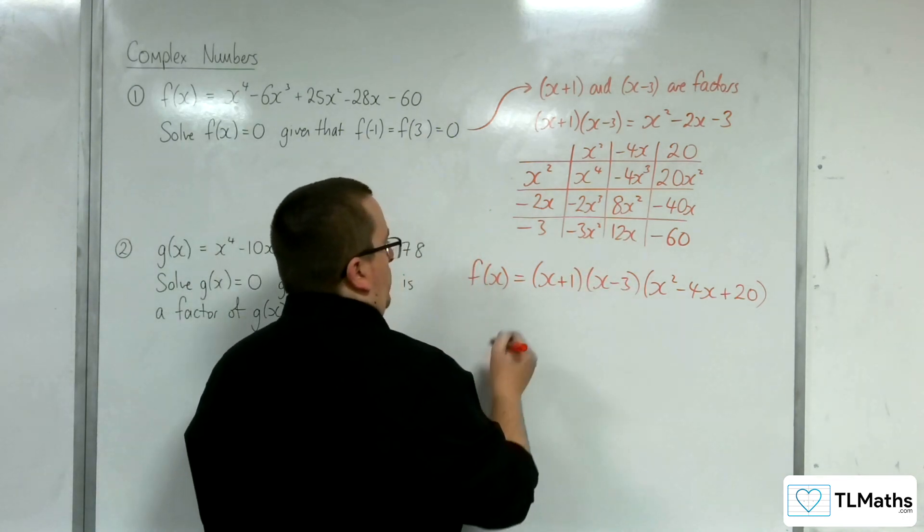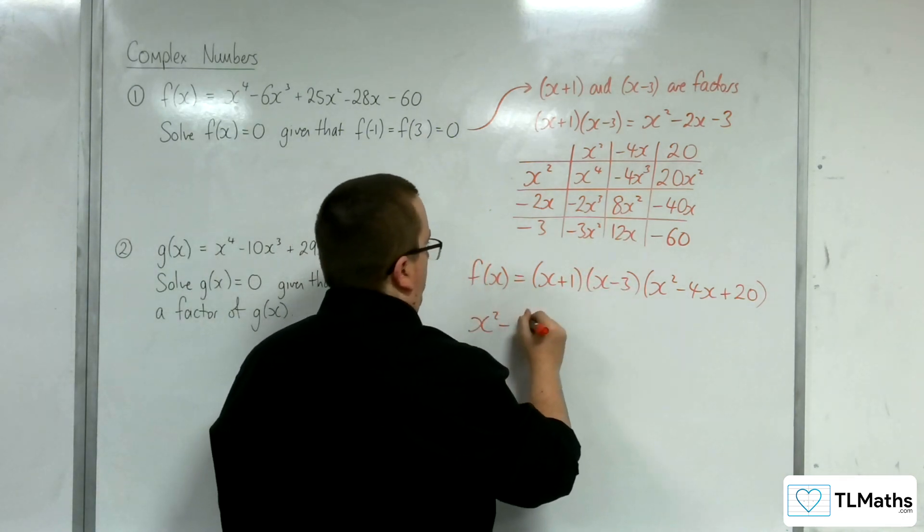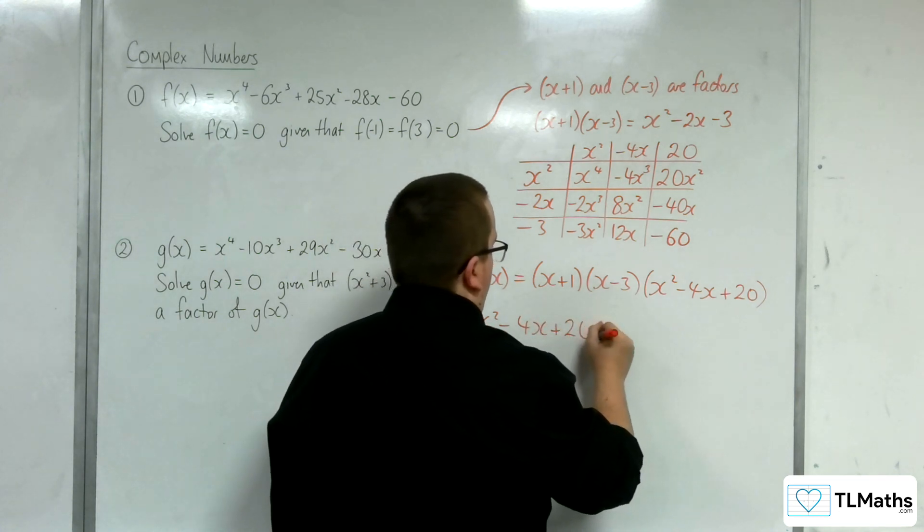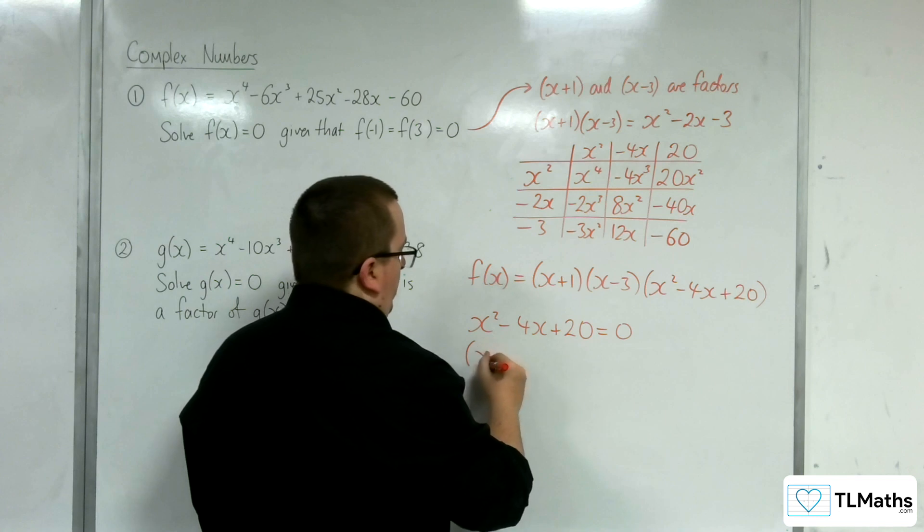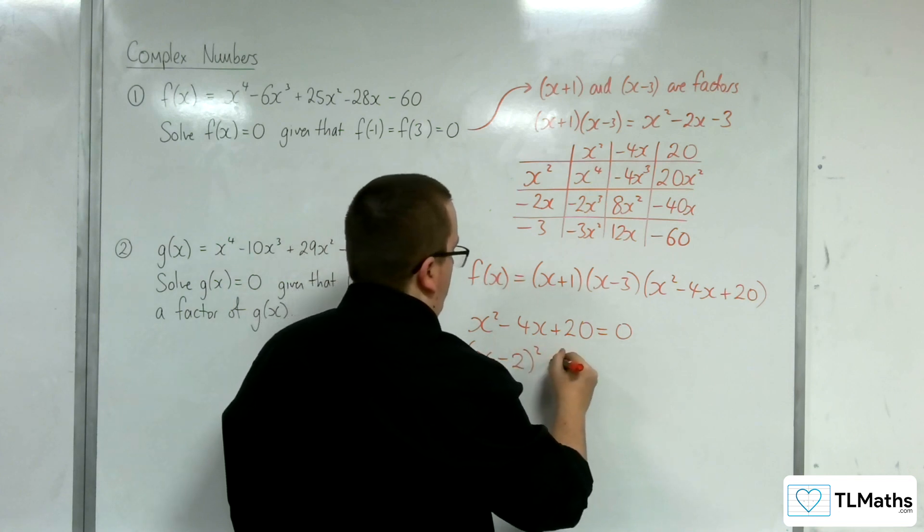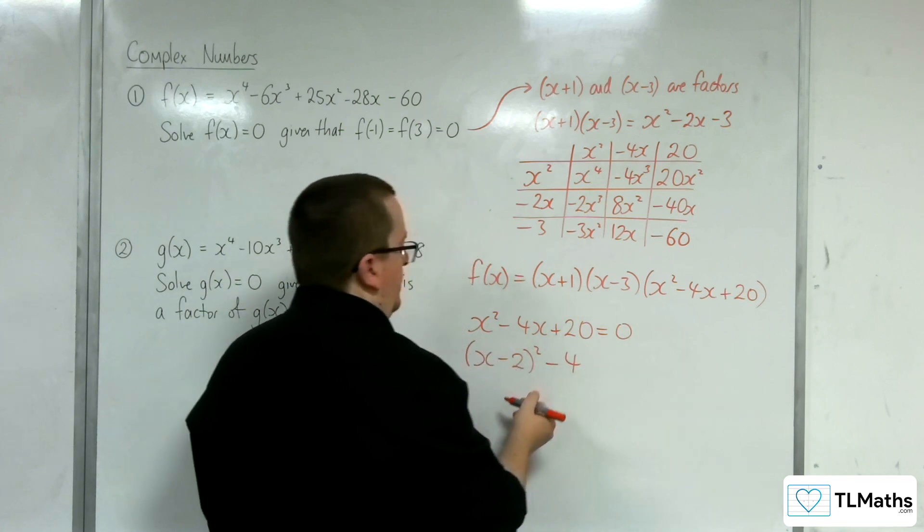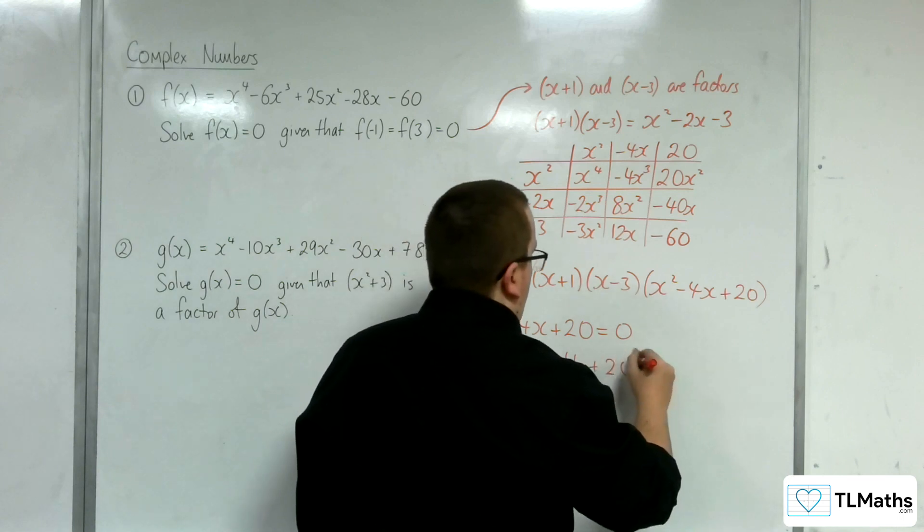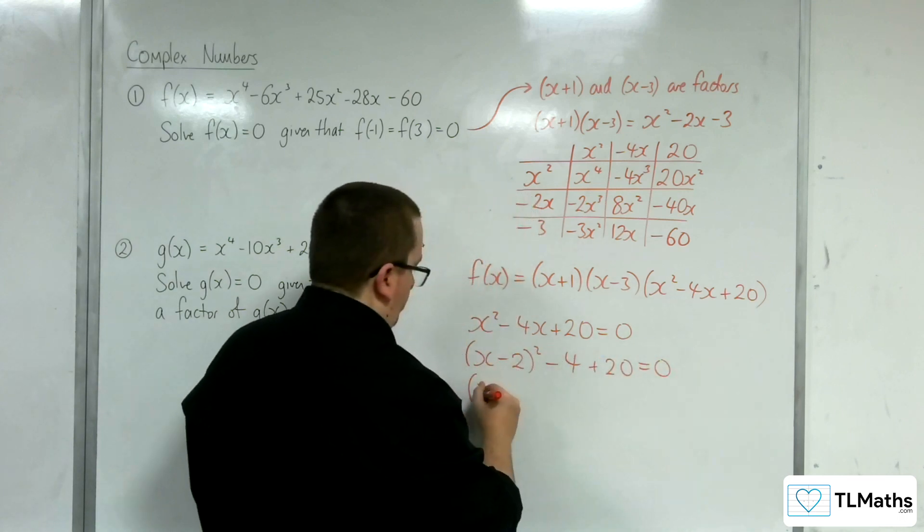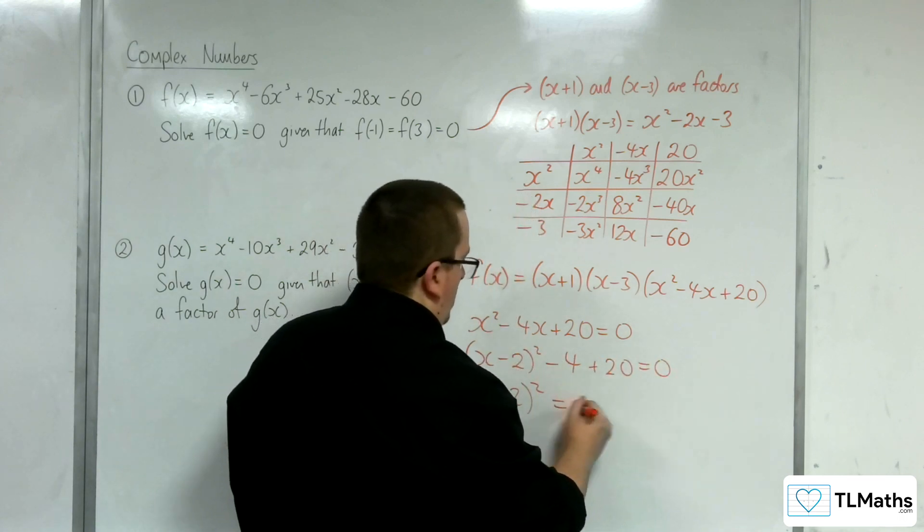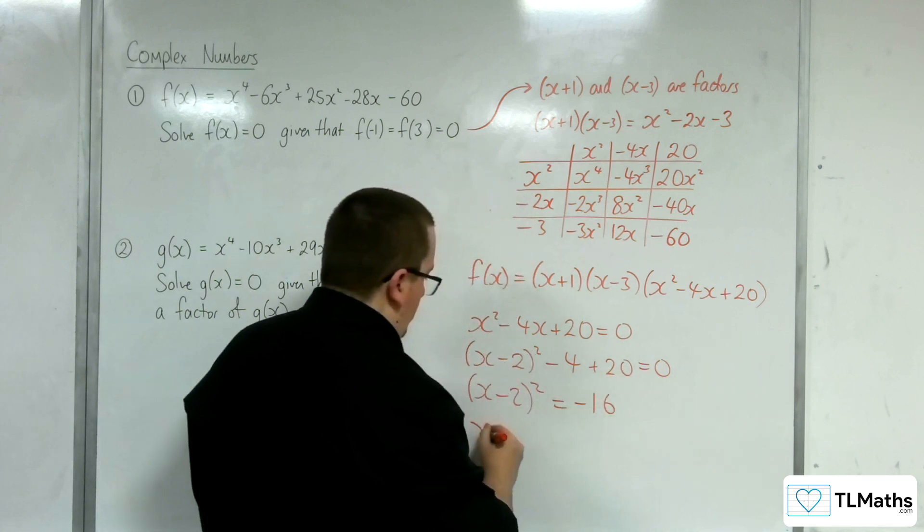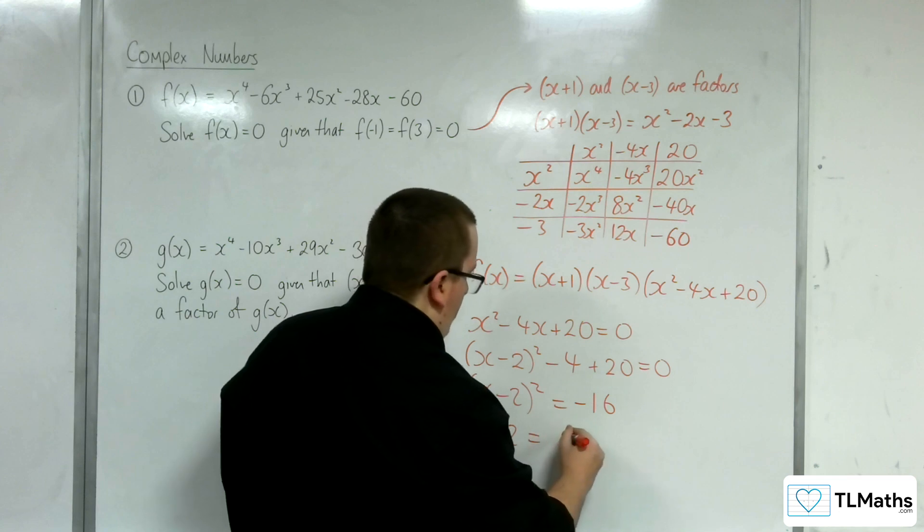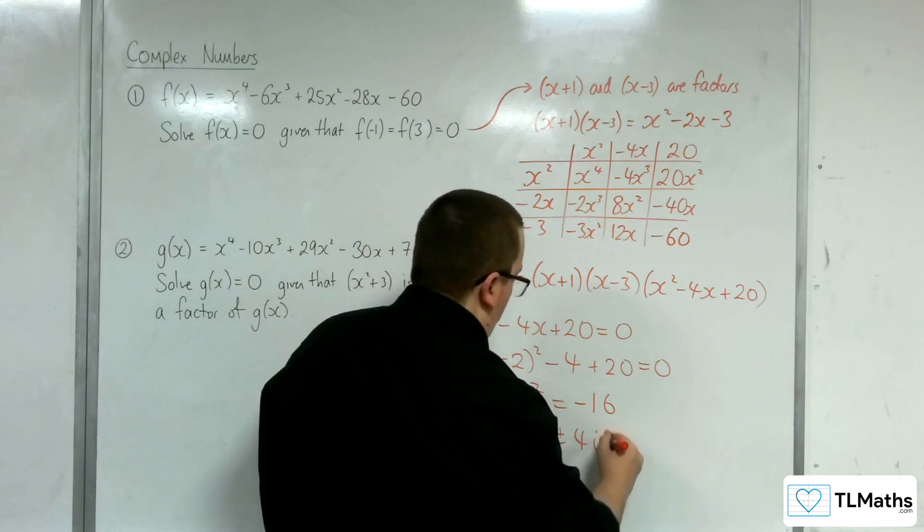Now, to solve f(x) = 0, I need to solve this quadratic here. So I'm going to use completing the square. (x - 2)² take away the square of 2 plus the 20 is 0. So -4 + 20 is 16, so negative 16 on the right-hand side. Square root both sides. So plus or minus 4i.